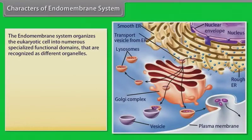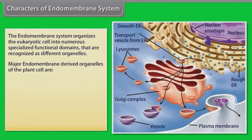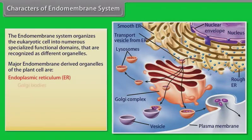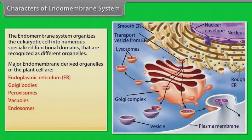The endomembrane system organizes the eukaryotic cell into numerous specialized functional domains that are recognized as different organelles. Major endomembrane-derived organelles of the plant cell are endoplasmic reticulum, Golgi bodies, peroxisomes, vacuoles, endosomes, autophagosomes, and outer nuclear envelope.